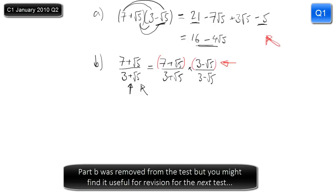So we know that the numerator is going to look like what we already worked out — that's done for us, so that helps. So now for the denominator, I have to do 3 plus root 5 times 3 minus root 5. I'll rewrite the numerator as 16 minus 4 root 5.